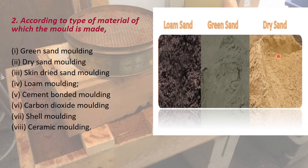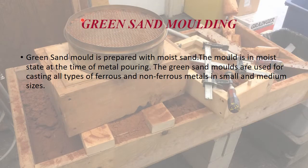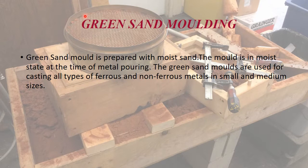We can see three types of sands: the first one is green sand, the second one is dry sand, and the last one is loam sand. Starting with green sand molding — the word green signifies that the molding sand is in a moist state at the time of metal pouring. The main ingredients of green sand are silica sand, clay, and moisture, which is water.